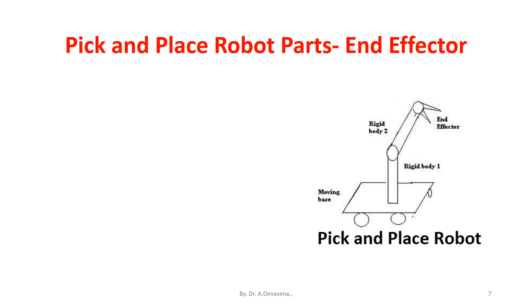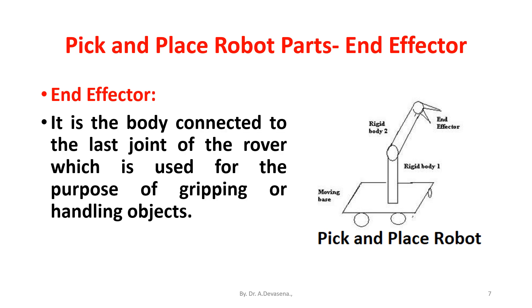End effector. The end effector is the body connected to the last joint of the rover, which is used for the purpose of gripping or handling objects. It can be an analogy to the arm of a human being.